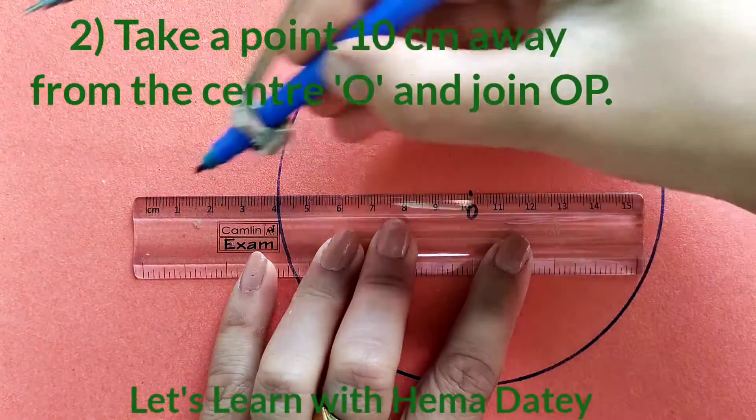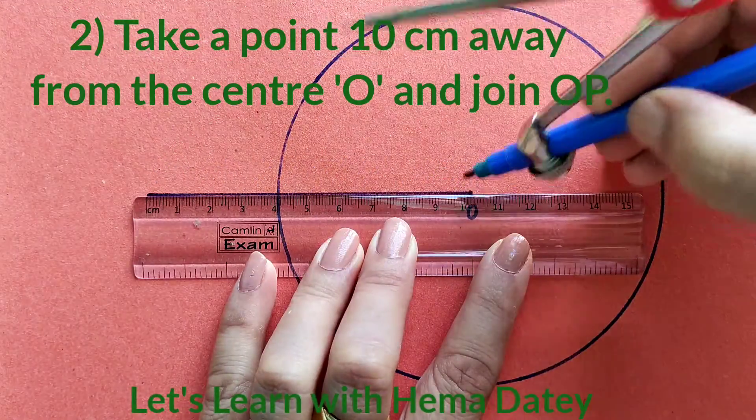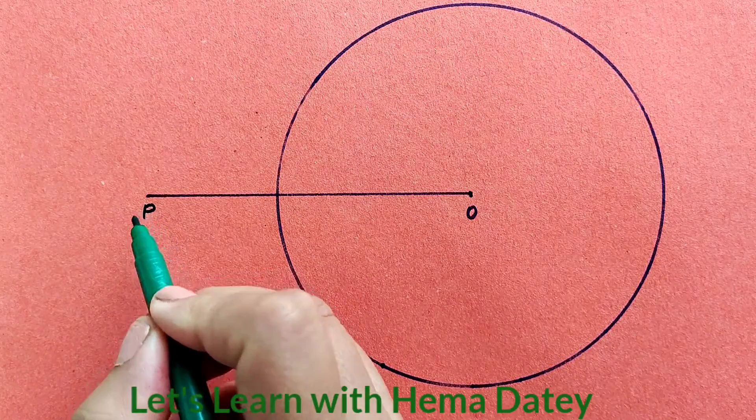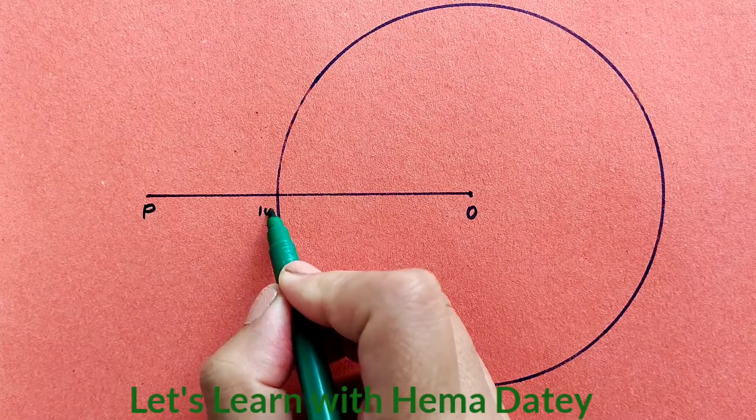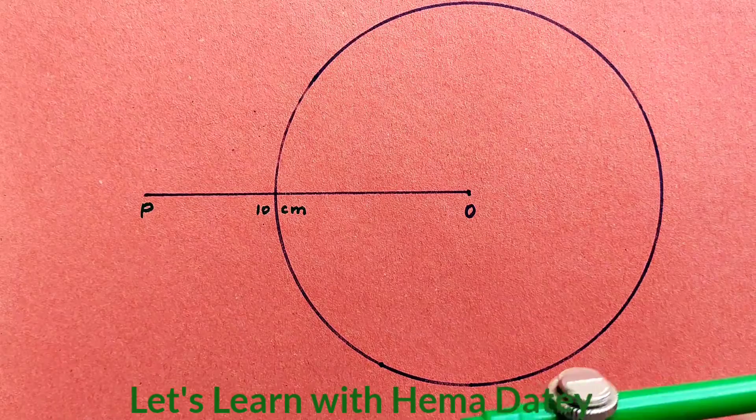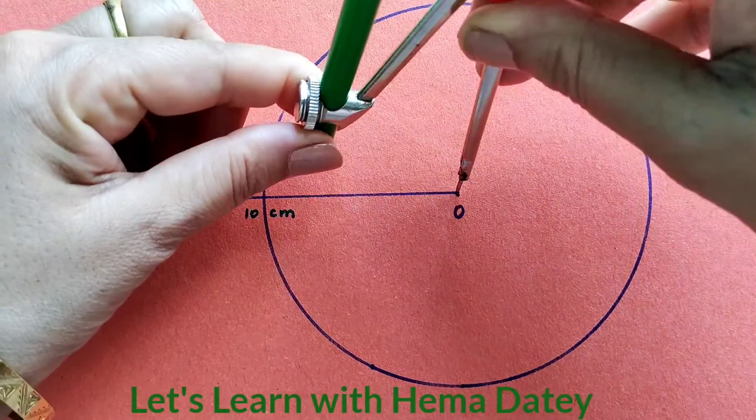Take a point 10 cm away from the center and join this point with O. Let's name this point P and the distance between P and O is 10 cm. We have to draw a pair of tangents to the circle from point P.